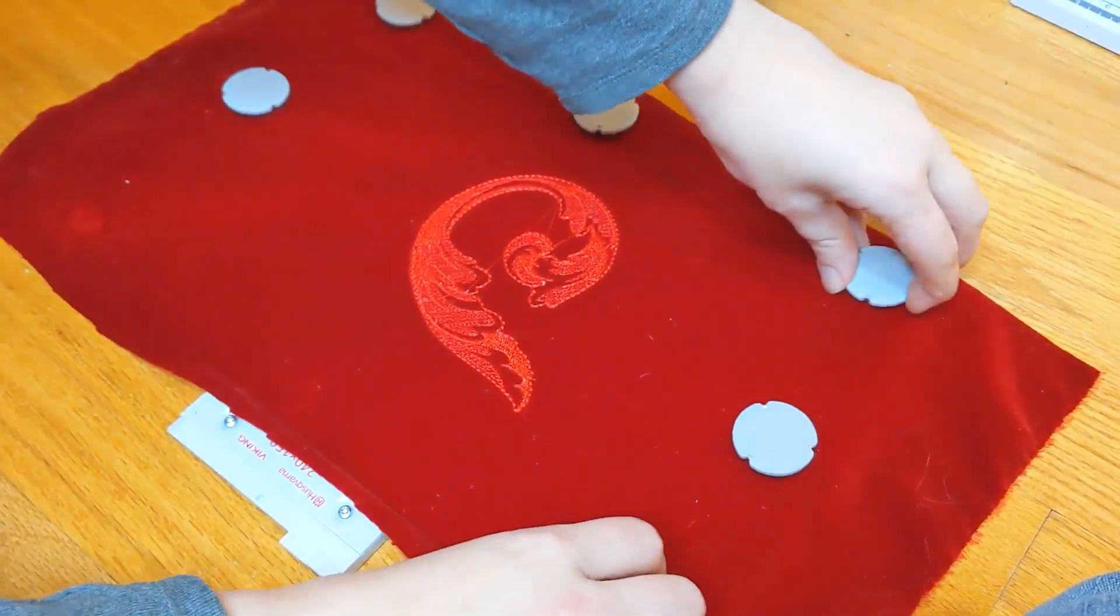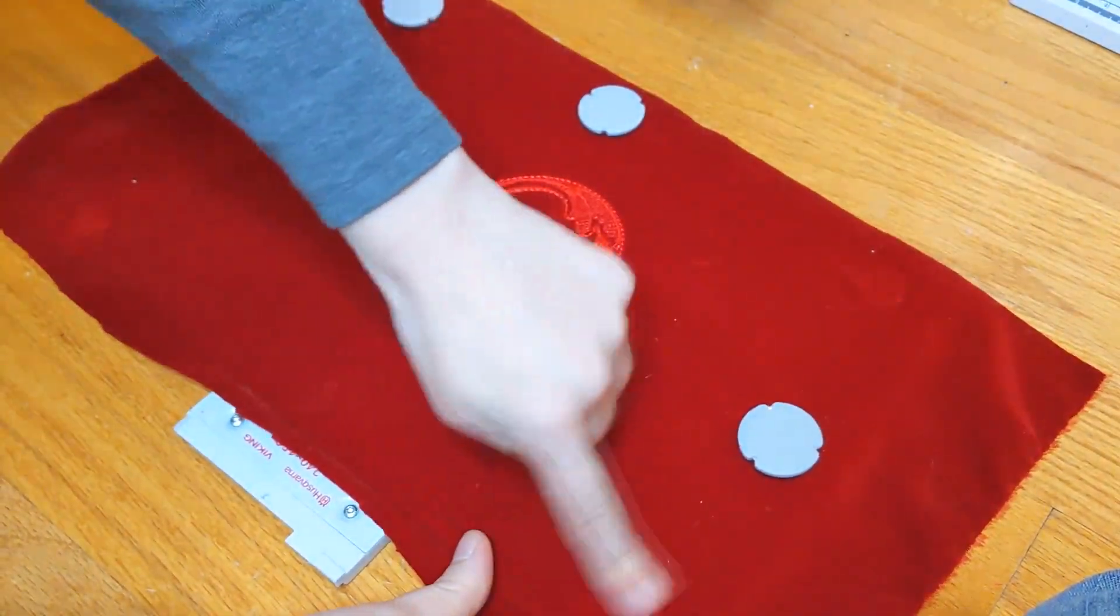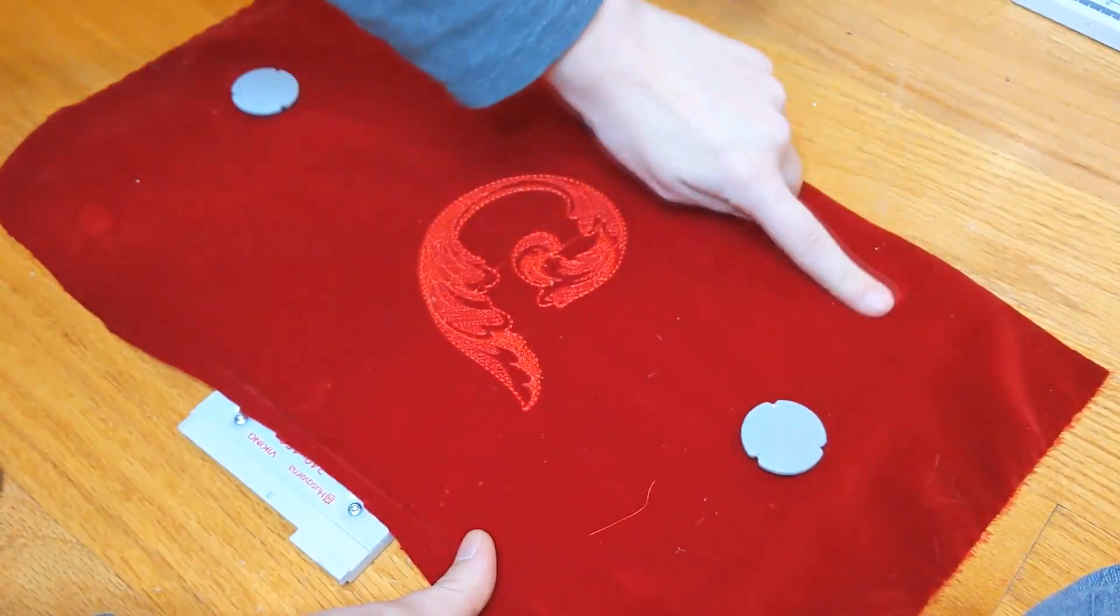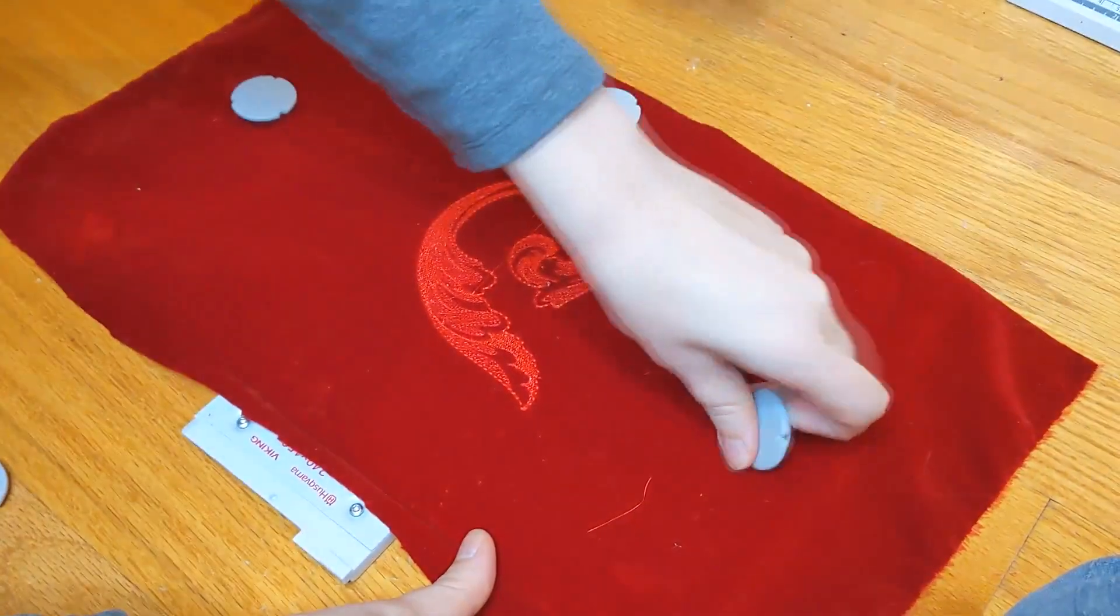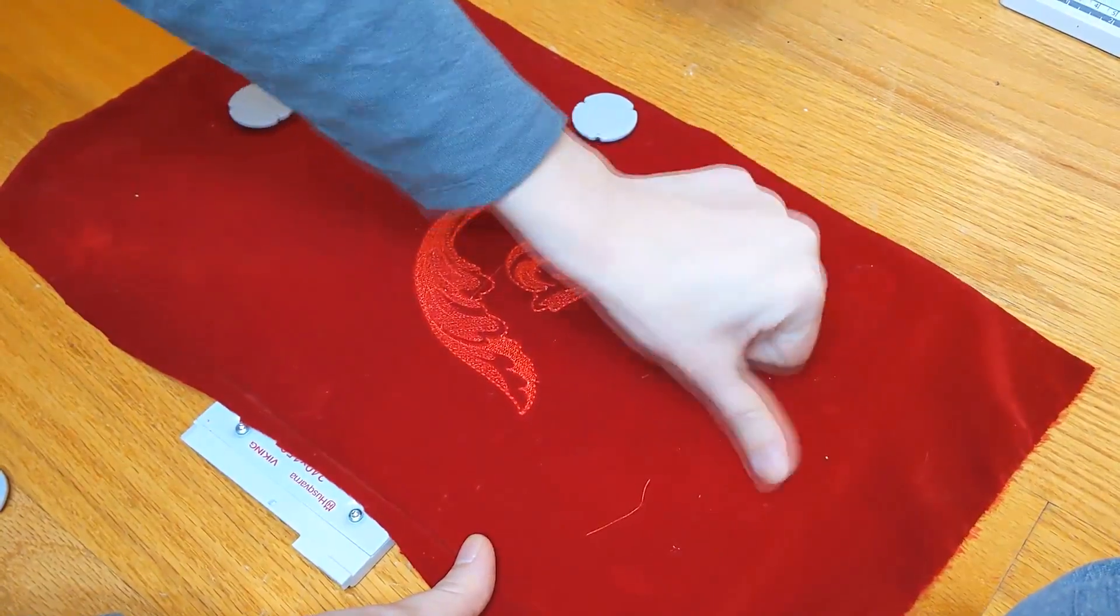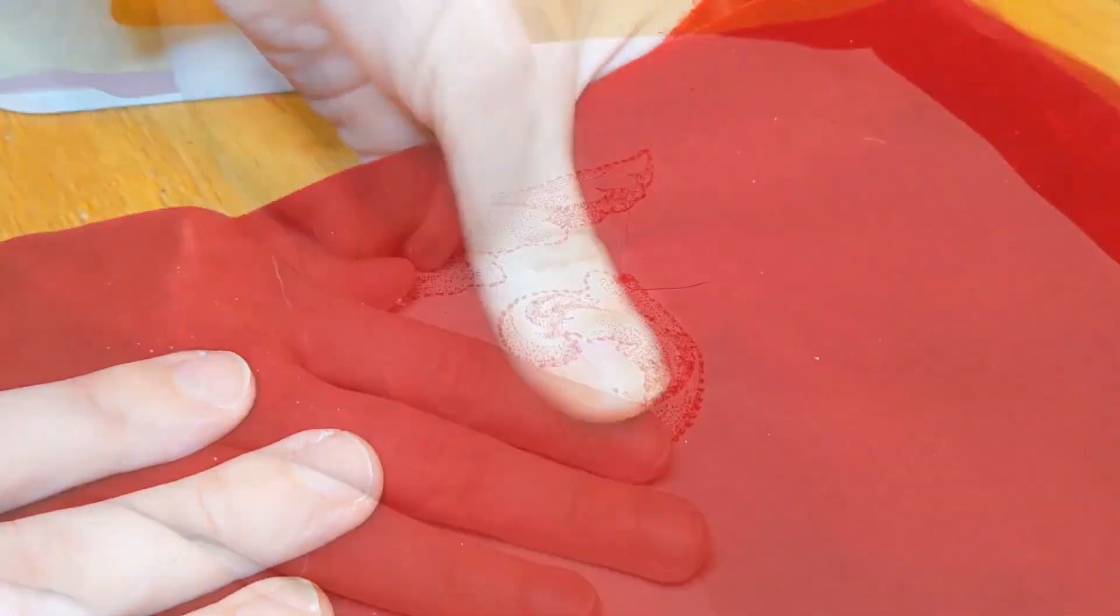To free your design, remove each of the magnets from the hoop. We found that the heavy magnets did press slightly into the velvet, leaving a small mark. However, this was only temporary and was easily buffed out by rubbing at the nap. That being said, always perform a test before hooping your own fabric.